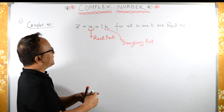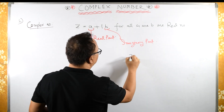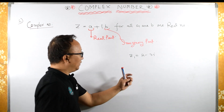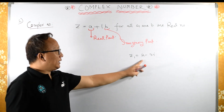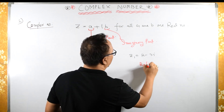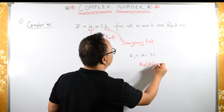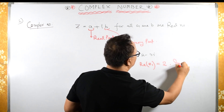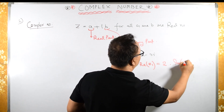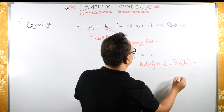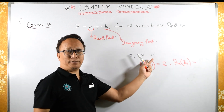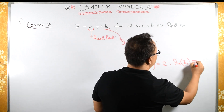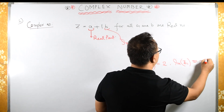Let us take an example. If we have Z1 equals 2 minus 3i, then what is the real part? The real part of Z1 is 2, and the imaginary part of Z1 is minus 3. You have to take it with its sign, therefore the imaginary part of Z1 is equal to minus 3.